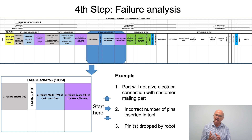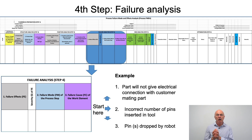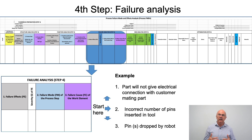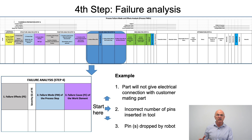In failure analysis we have three things to consider, and we start at box two — the failure mode. For example, a failure mode could be that the incorrect number of pins are inserted into the tool. The effect — going back to box one — is that the part will not give electrical connection with the customer mating part. Then we think about the failure causes, and remember there could be multiple potential failure causes against one failure mode. One example is that the robot picked up three pins, but in moving them into the tool one of the pins was dropped.